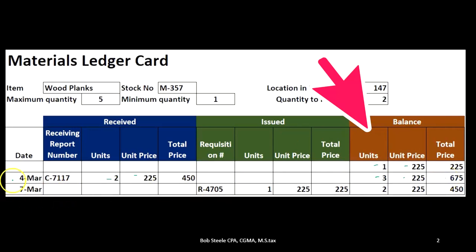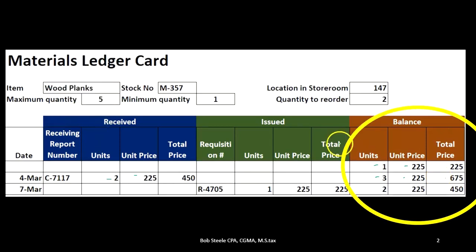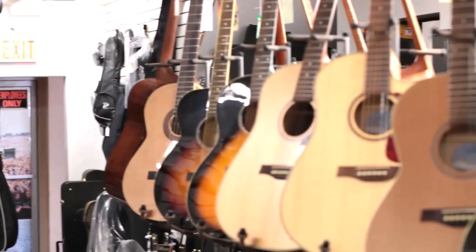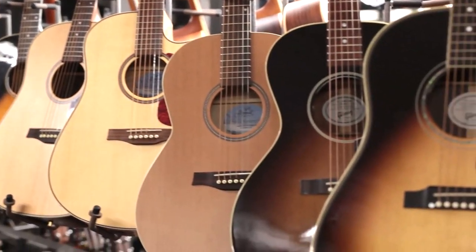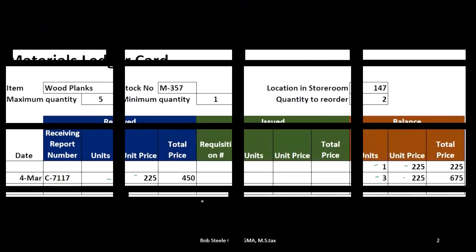As of March 4, we have $675 worth of inventory for wood planks. Then on March 7, we have an issuance. Why would we issue? There was a request from work in process — say there's a new guitar we need to make and they ordered one plank of wood. We then have a requisition form.